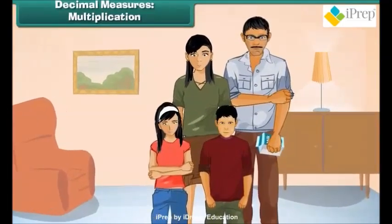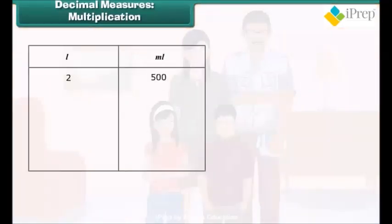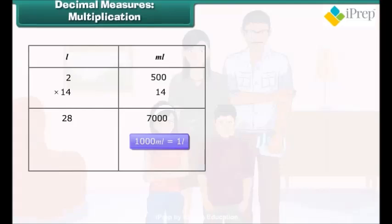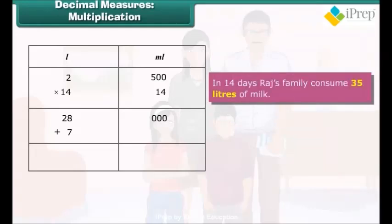Raju's family has a consumption of 2 liters and 500 milliliters of milk per day. How much milk is consumed by this family in 14 days? Multiplying 14 with 2 liters and 500 milliliters, we get 28 liters and 7000 milliliters. Since 1000 milliliters equals to 1 liter, therefore, 7000 milliliters equals 7 liters. These 7 liters is added to 28 liters. Thus, in 14 days, Raju's family consumes 35 liters of milk.